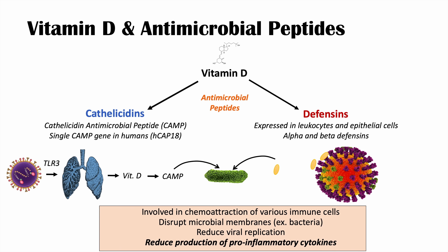Here is a brief summary of the effects of cathelicidins and defensins. They are involved in chemoattraction of various immune cells, they disrupt microbial membranes like bacteria, they reduce viral replication, and importantly, they reduce production of pro-inflammatory cytokines — which becomes particularly important in COVID-19 infections.